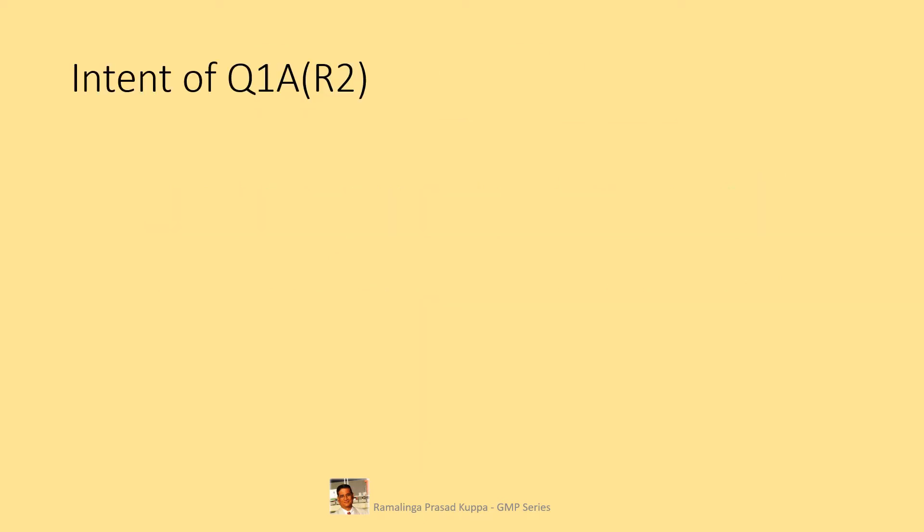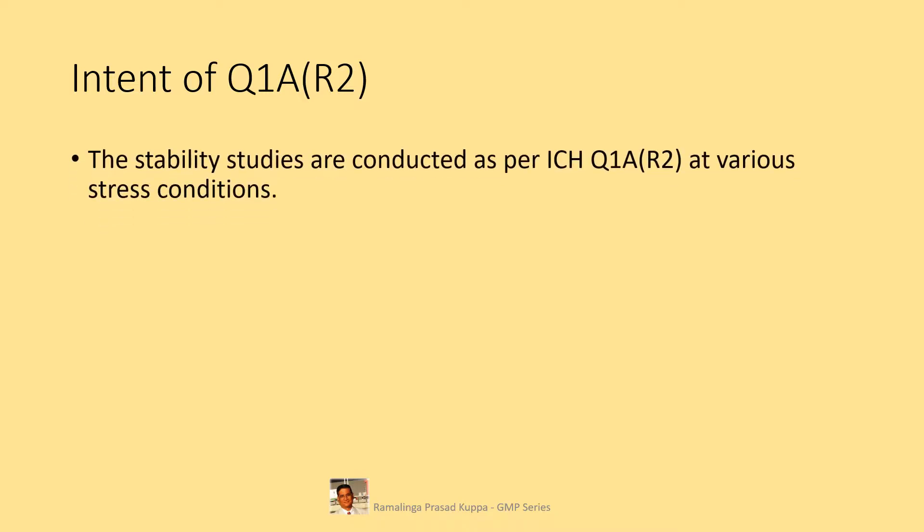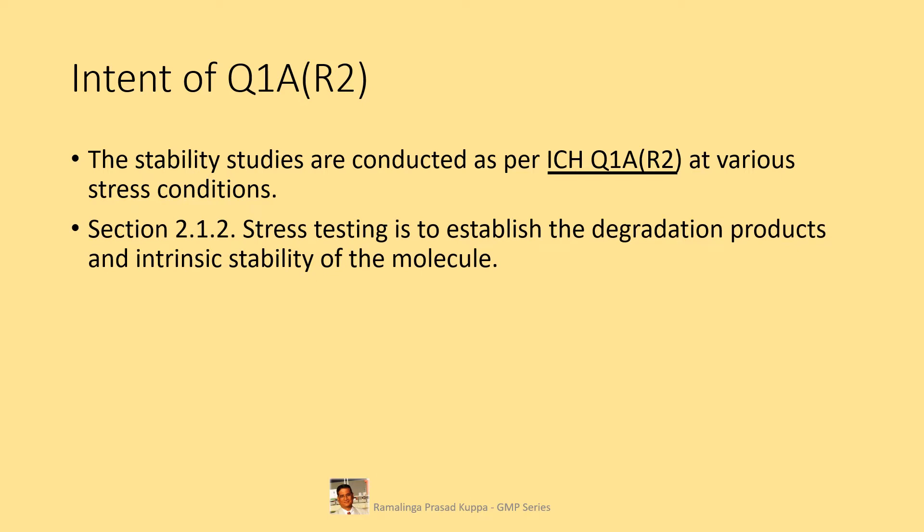Let us see the intent of Q1A R2. The stability studies are conducted as per ICH Q1A R2 at various stress conditions. Q1E guideline is a supporting requirement for Q1A R2 guideline. Q1A R2 prescribes the conditions for carrying out stability studies. Q1E prescribes the requirements for assigning the shelf life for the product. It is necessary to understand Q1A R2 fully before going into the evaluation guideline Q1E. Section 2.1.2: stress testing is to establish the degradation products and intrinsic stability of the molecule. Basic stress testing requirements are described in this section.